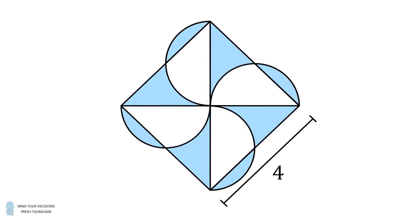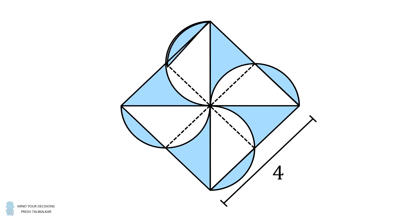There are many ways to solve the problem, but I will illustrate one method. Construct four line segments — each line segment connects the center of the square to a midpoint of the square. The region between this line segment and the circular arc of the semicircle is a circular segment, and it's exactly equal to the circular segment that's outside of the square. In other words, we can move each of these circular segments outside of the square to the region that's inside the square.